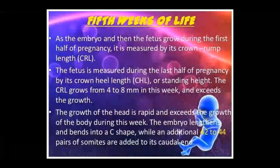In the 5th week of life, the embryo transitions into a fetus. During the first half of pregnancy, fetal size is measured by crown-rump length (CRL); in the second half, by crown-heel length (standing height). CRL growth in this week is 4–8 mm. The embryo curves into a C-shape, and 42–44 pairs of somites are added at the caudal end.